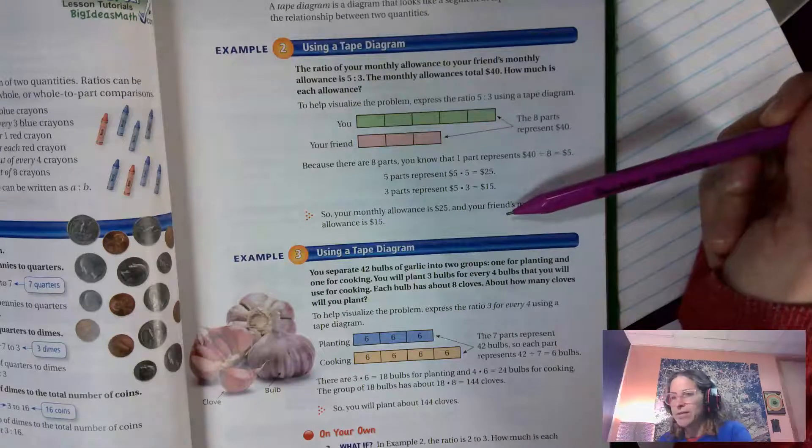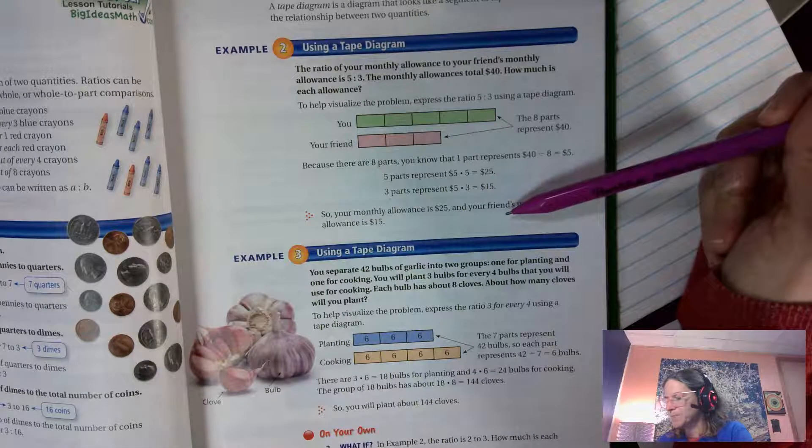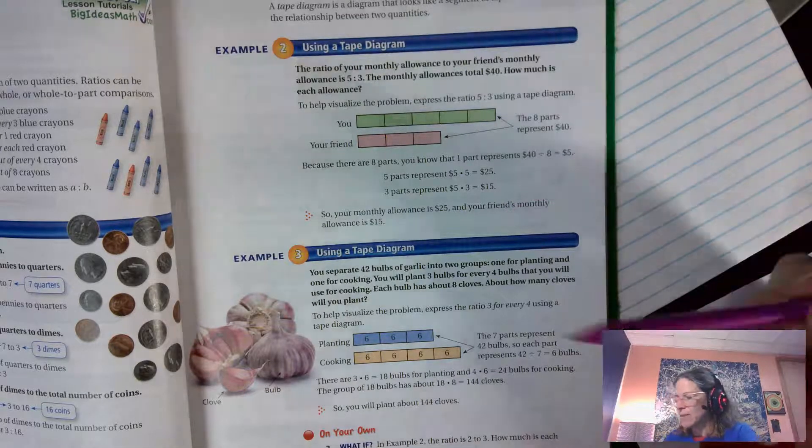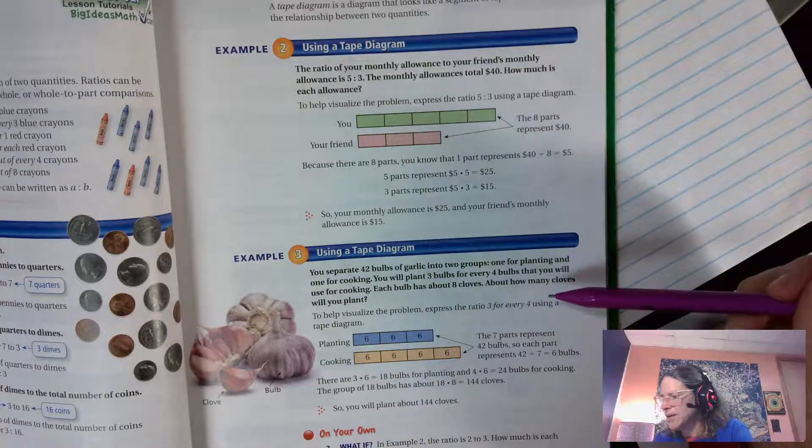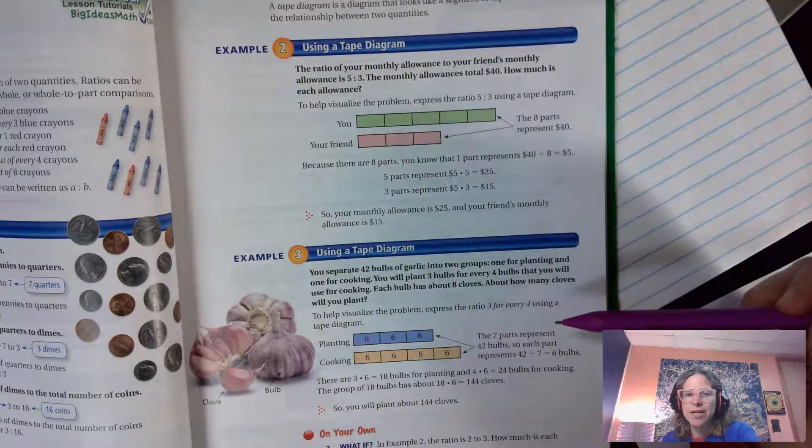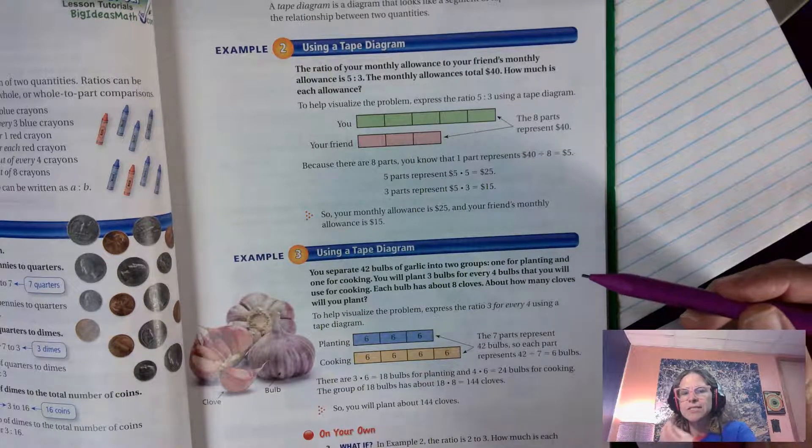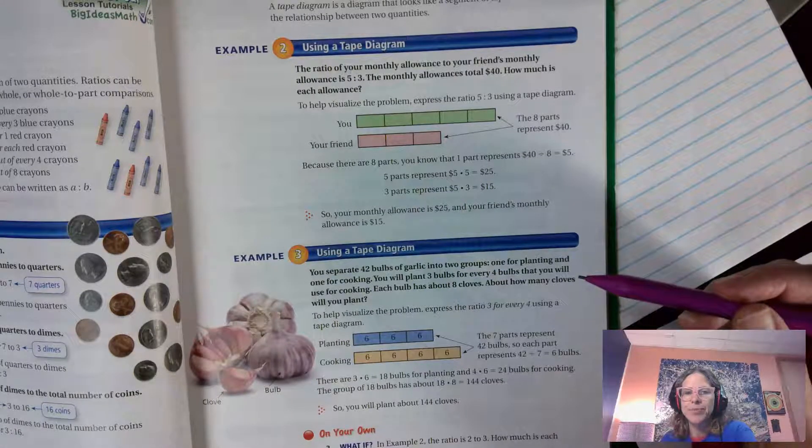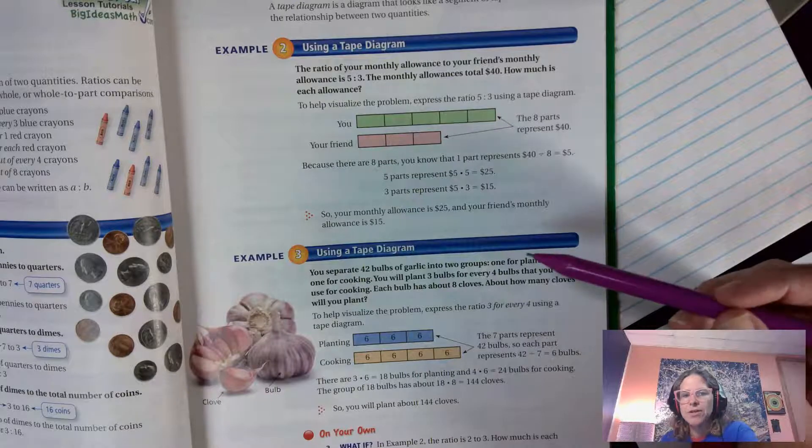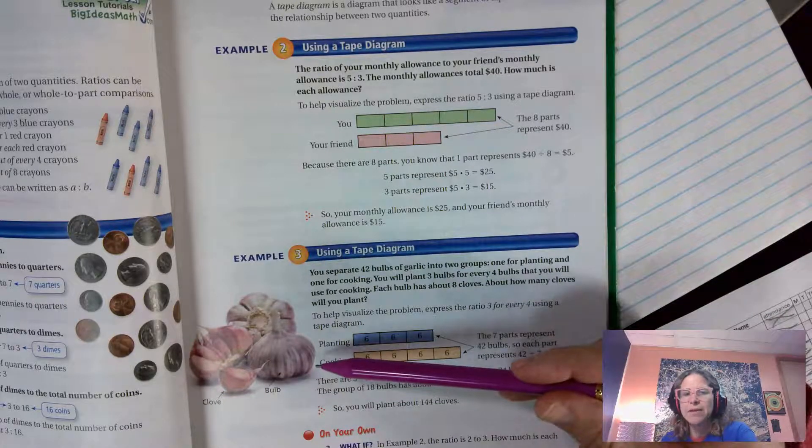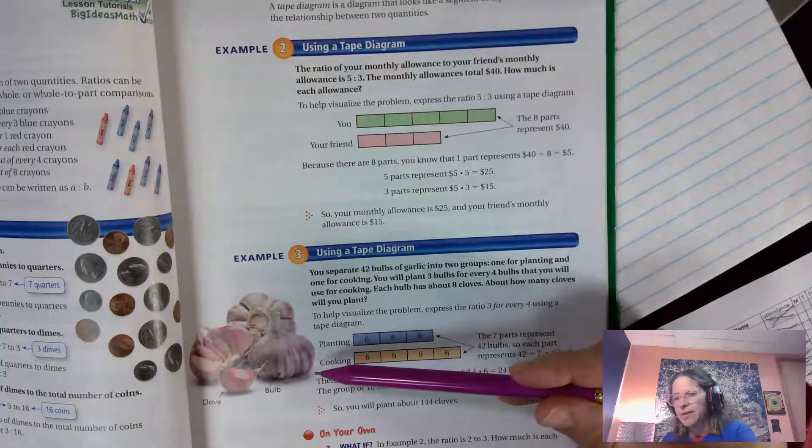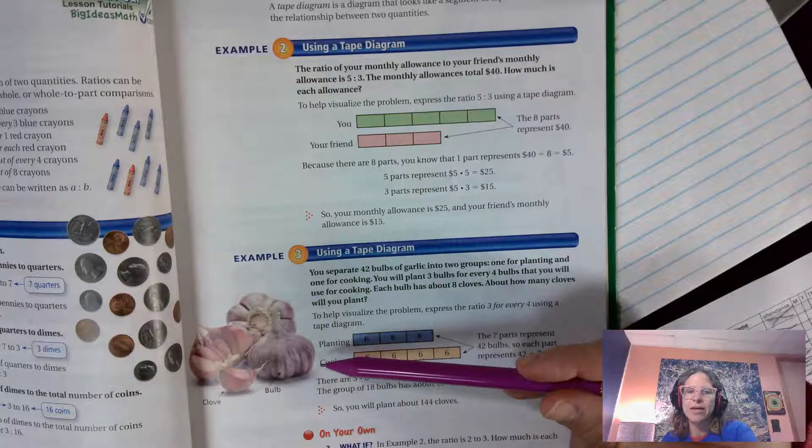And then there's another way that you can use a tape diagram is to find out how many when you have something that's even smaller than those tiny little parts. So here's my giant bulb of garlic. If you've never smelled them, they are delicious and they help keep vampires away, so you can't go wrong.